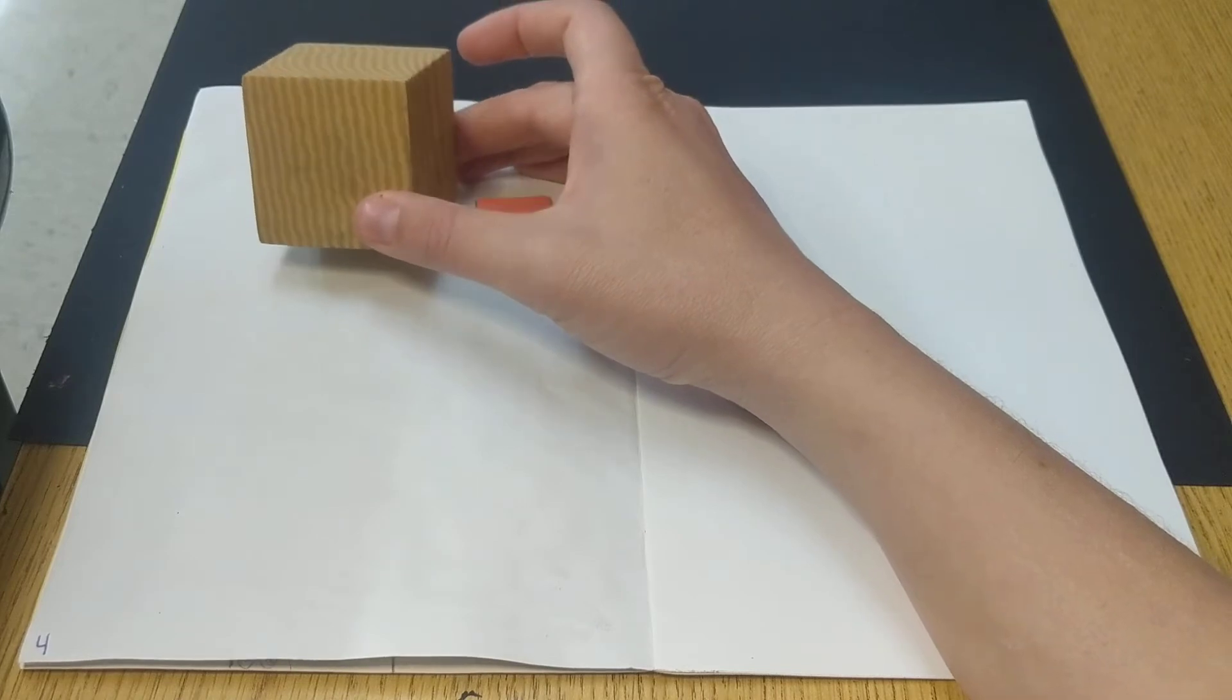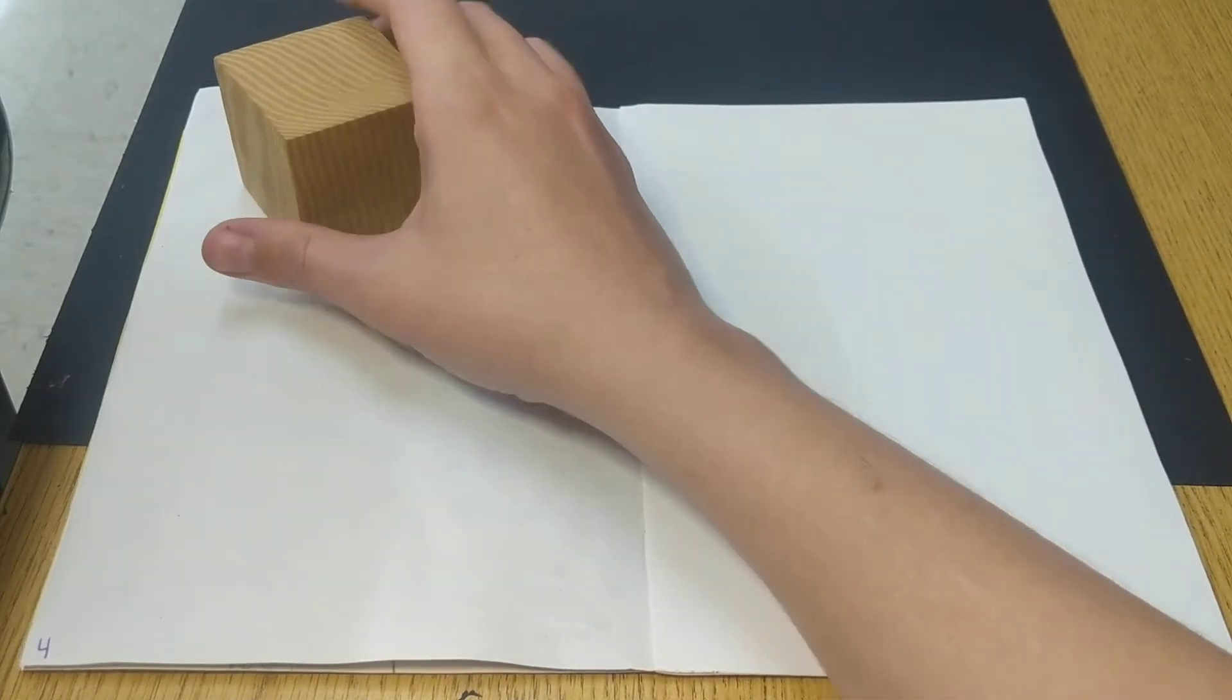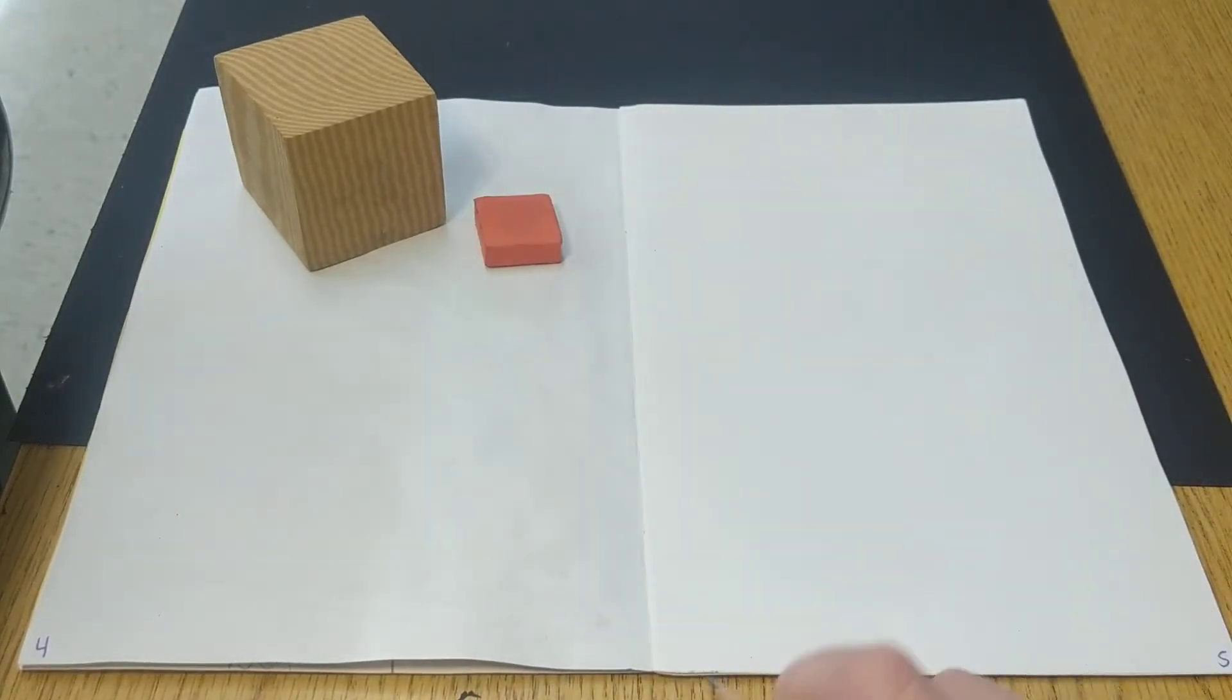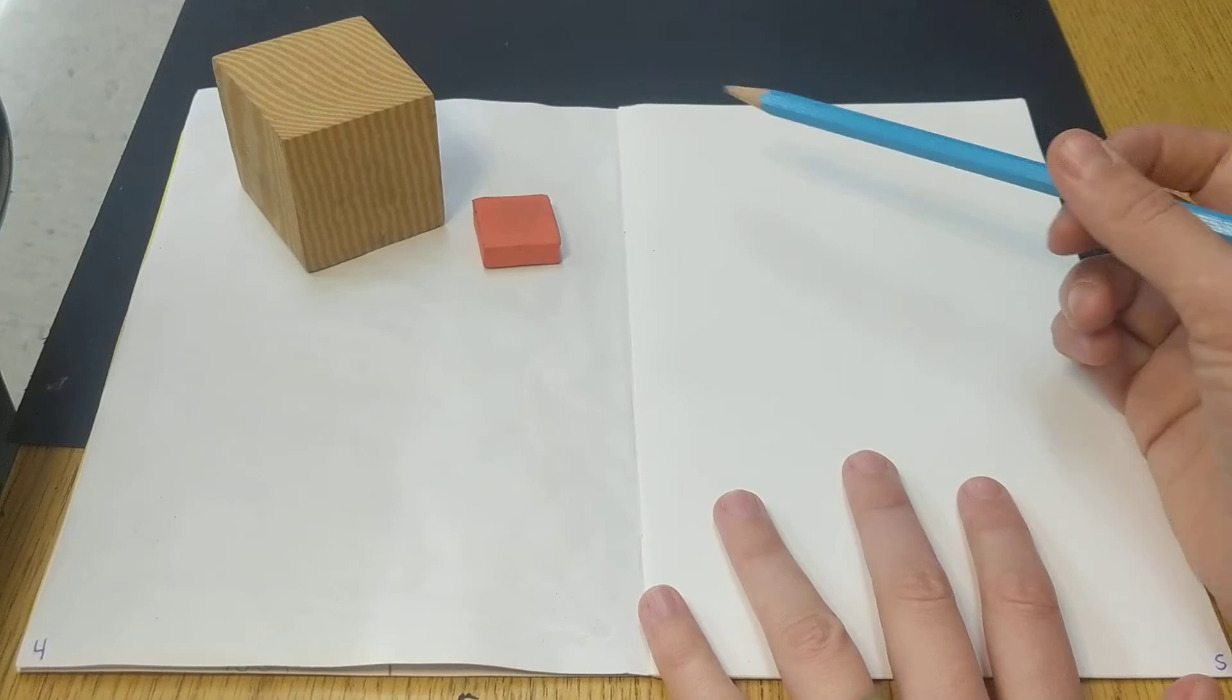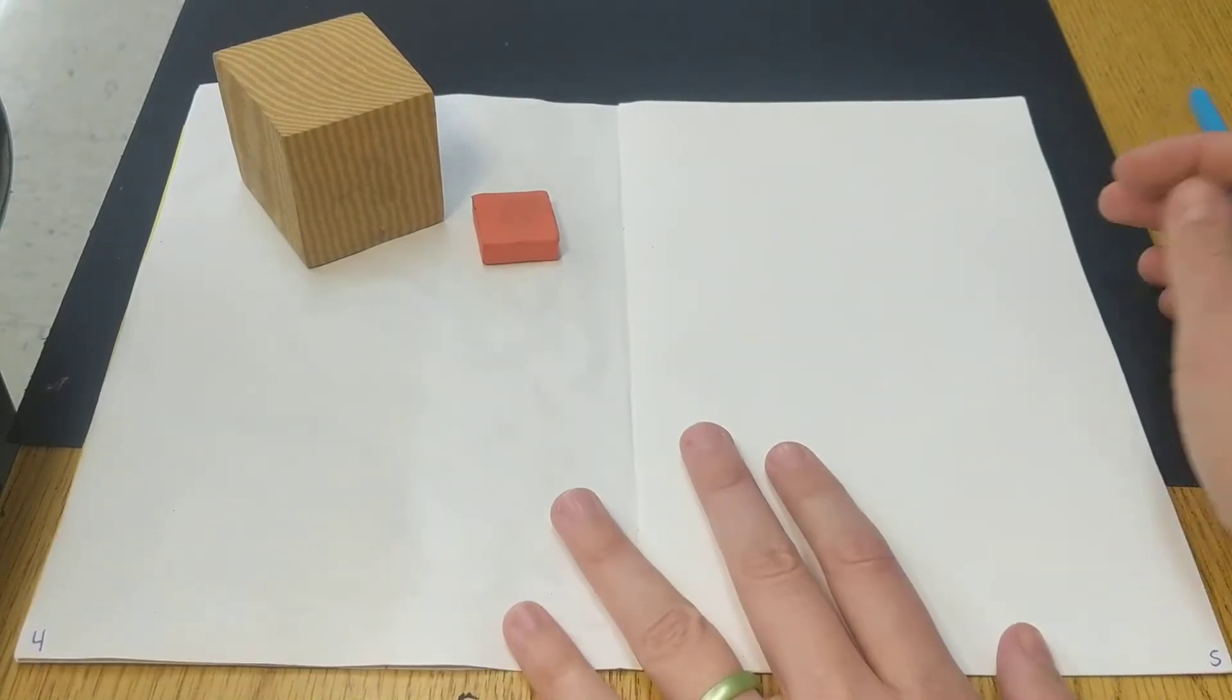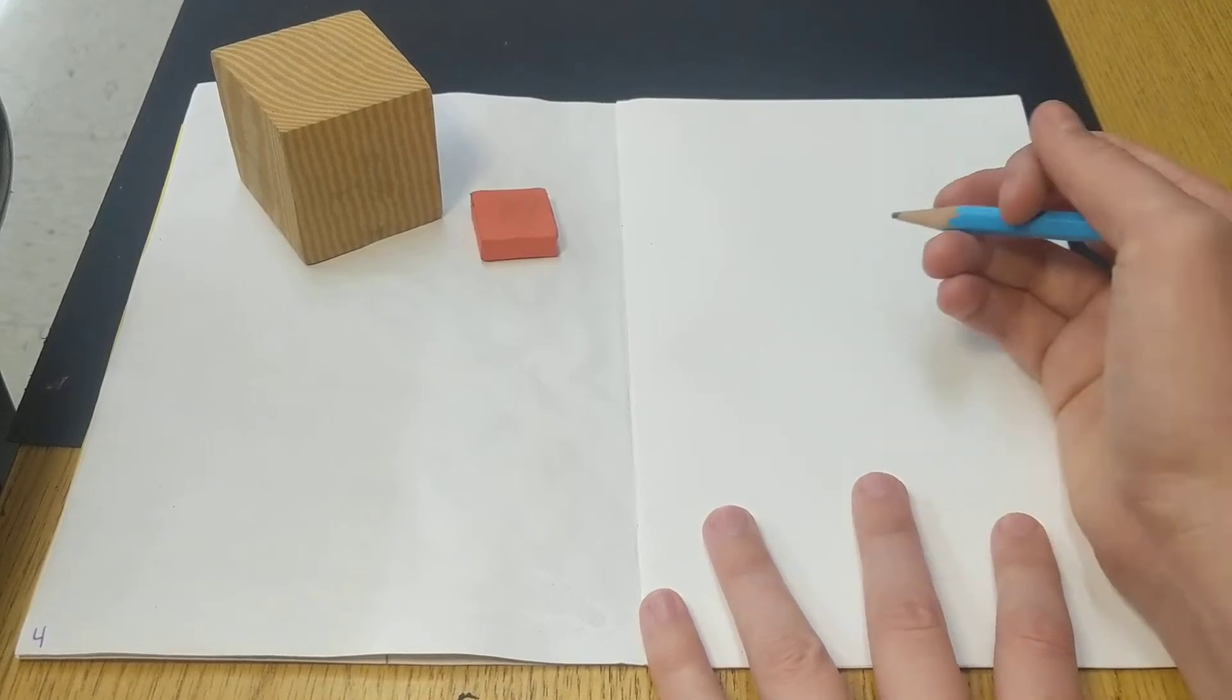So when we draw a cube, we usually end up seeing three sides of it. Let's say we're looking at our cube from this direction. So we're on pages 4 and 5. You can use both or just one. It kind of depends on how much practicing you do today. But we're going to start with this cube.